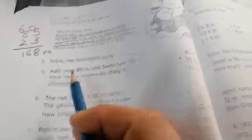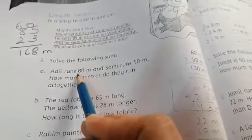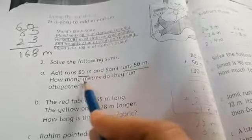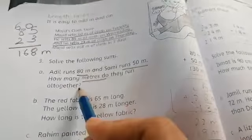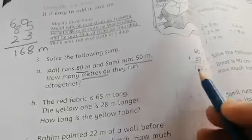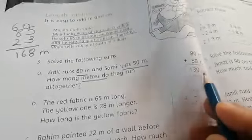Now, what problem? Adil runs 80 meter and Samir runs 50 meter. How many meters do they run all together? We will add these two values. 80 meter and 50 meter. The total meter is 130 meter.